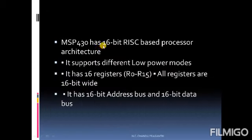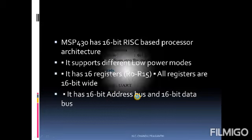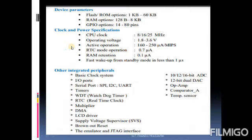The MSP430 has a 16-bit RISC-based processor architecture. RISC means Reduced Instruction Set Computer — it supports reduced, fewer instructions. It supports different low-power modes, which is the main advantage of this board. It has 16 registers ranging from R0 to R15, all of which are 16-bit. It has a 16-bit address bus and a 16-bit data bus.